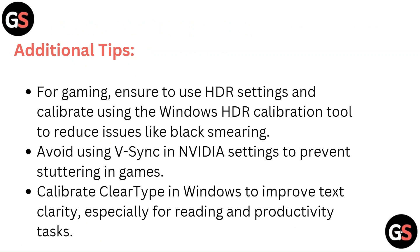Additional tips: For gaming, ensure to use HDR settings and calibrate using the Windows HDR calibration tool to reduce issues like black smearing. Avoid using V-Sync in Nvidia settings to prevent stuttering in games. Calibrate ClearType in Windows to improve text clarity, especially for reading and productivity tasks.